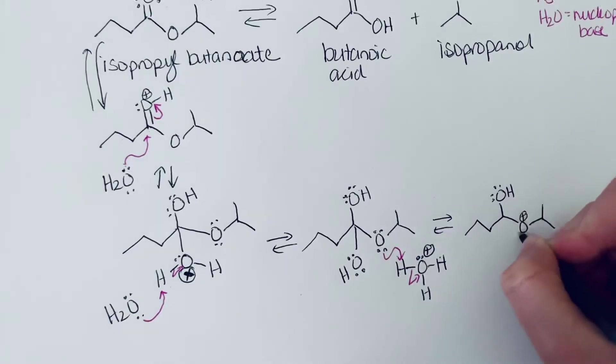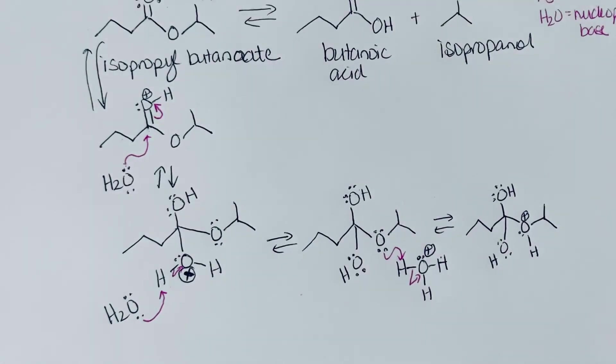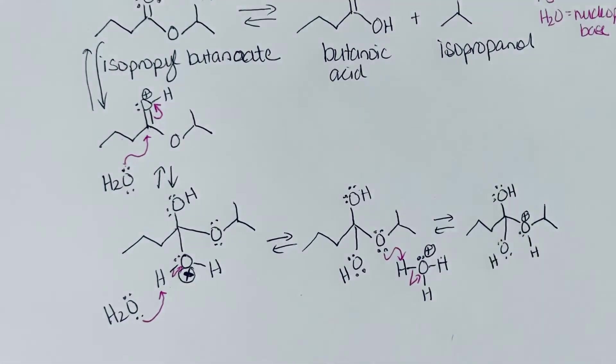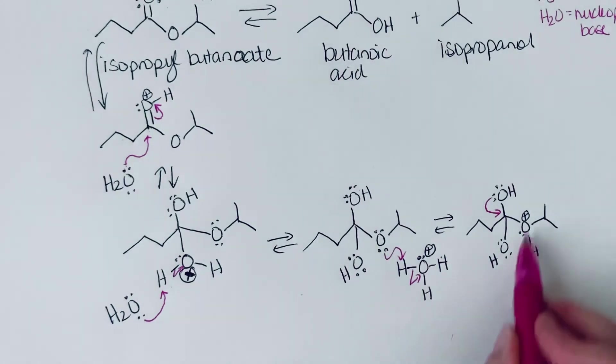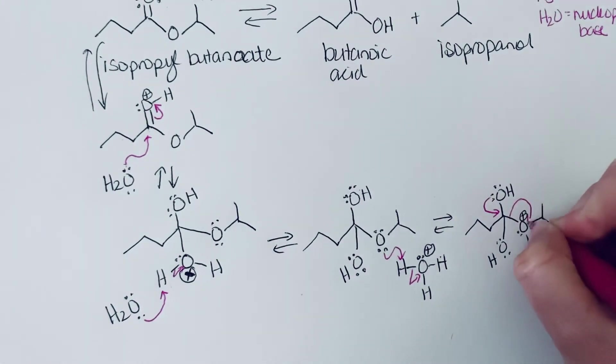So we are protonating this to make a good leaving group. So now it's got a proton. And we still have this OH. So we are actually now getting really close to the product. Because we've got our isopropanol that can leave. And how it's going to leave is it's going to be assisted by the lone pair electrons on the oxygen. And so we're going to push these down. And that's going to form the double bond, making this look a lot more like the carboxylic acid product. And kicking off the leaving group.